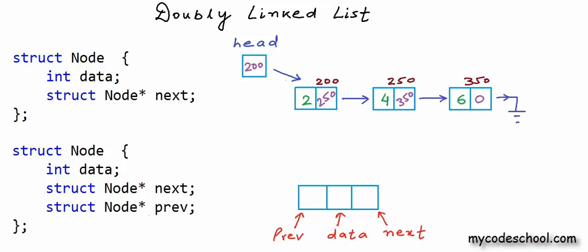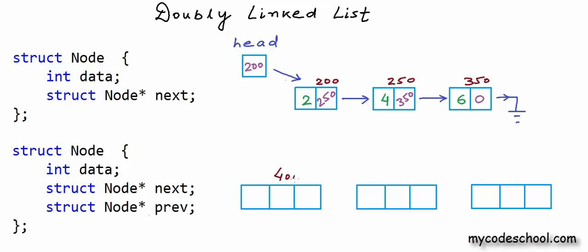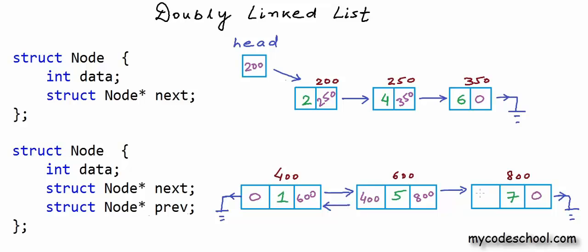Let's say I want to create a doubly linked list of integers. I have created three nodes here. Let's say these nodes are at addresses 400, 600, and 800 respectively. I'll fill in some data. The rightmost cell in each node stores the address of the next node: for the first node this field will be 600, for the second node it will be 800, and for the third node it will be 0. For the first node there is no previous node, so the leftmost cell will be 0 or null. The previous field for the second node will be 400, and the previous field for the third node will be 600. We will also have a variable to store the address of the head node. So what we have here is a doubly linked list of integers with three nodes.